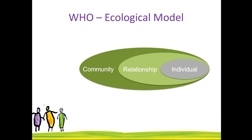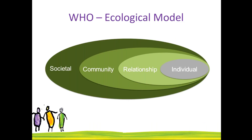This is the ecological model from the World Health Organization that says, similar to what Lori was talking about, it's not just an individual issue. There are also relationship-level factors. People have different kinds of vulnerabilities — if you are lesbian, gay, transgendered, if you're indigenous, if you have a disability, these all complicate the situation. You may face multiple oppressions. The community plays a role in society. We could ask: what is it about our society that creates the conditions for abuse to happen in relationships?